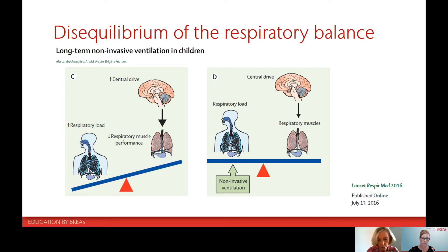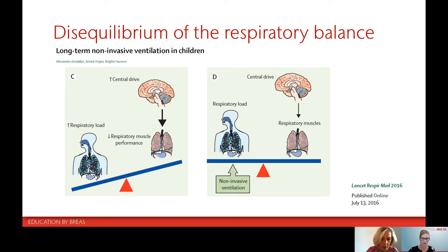There is a third type of disorders which is much more uncommon: disorders characterized by an abnormality of central drive. One of the most well-known disorders in children, however very rare, is congenital central hypoventilation, or Ondine's curse. In this disease, the respiratory muscles are normal, the respiratory system is normal, but the brain doesn't drive correctly the respiratory muscles.